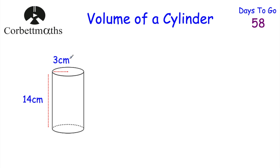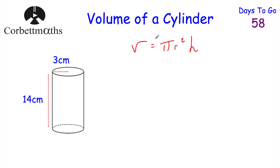Now let's look at finding the volume of a cylinder. We want to find the area of the cross-section — when you slice a cylinder, the cross-section is a circle. So we find the area using πr², then multiply by the height of the cylinder. The formula is: volume of a cylinder = πr²h.